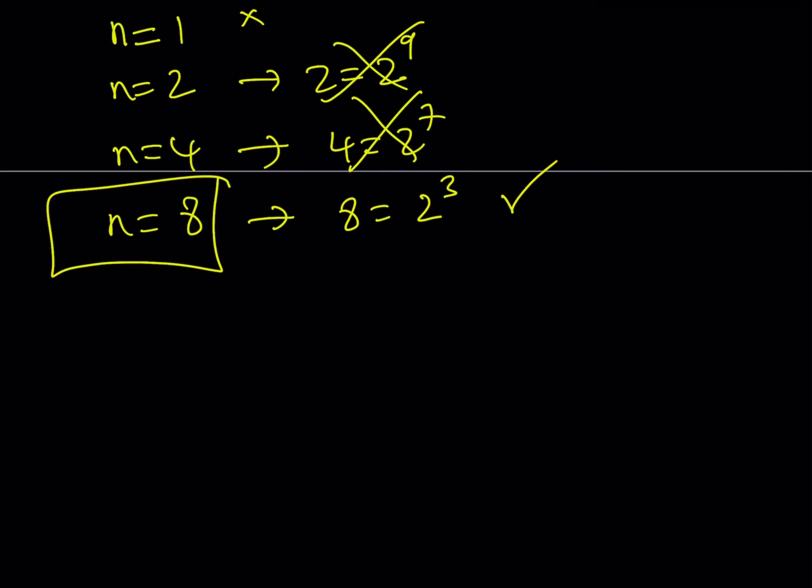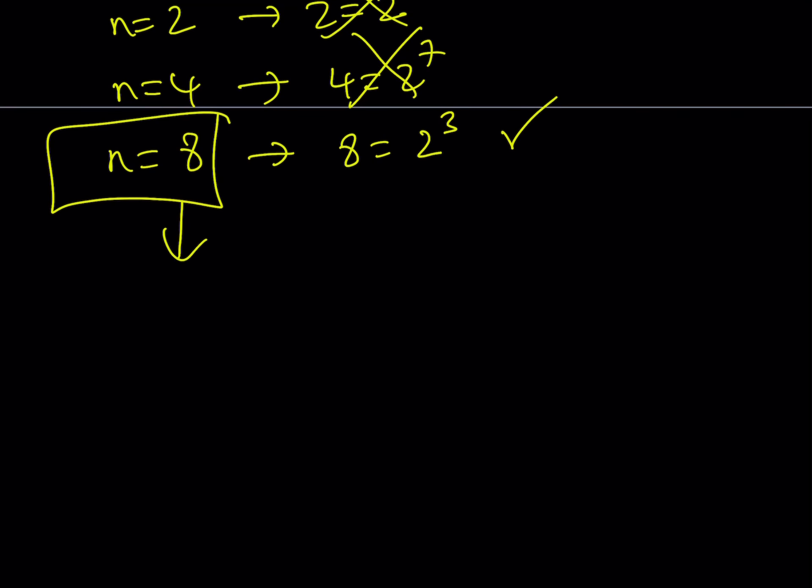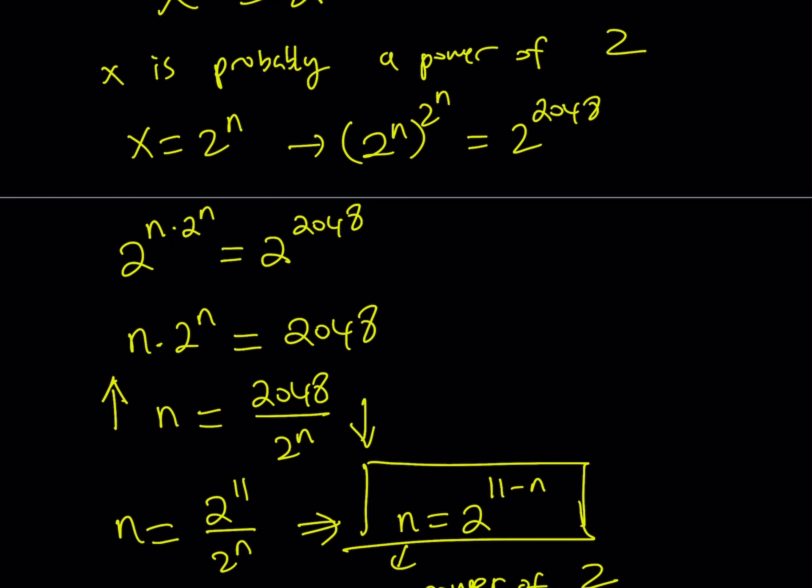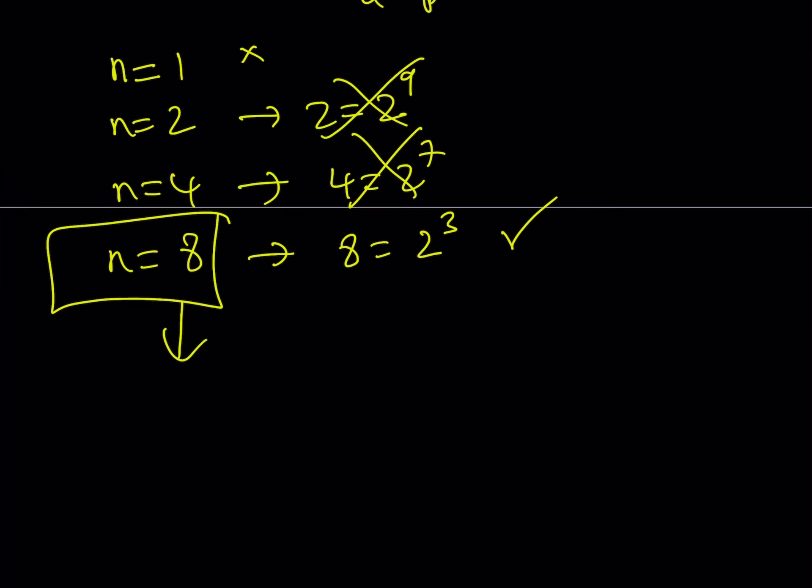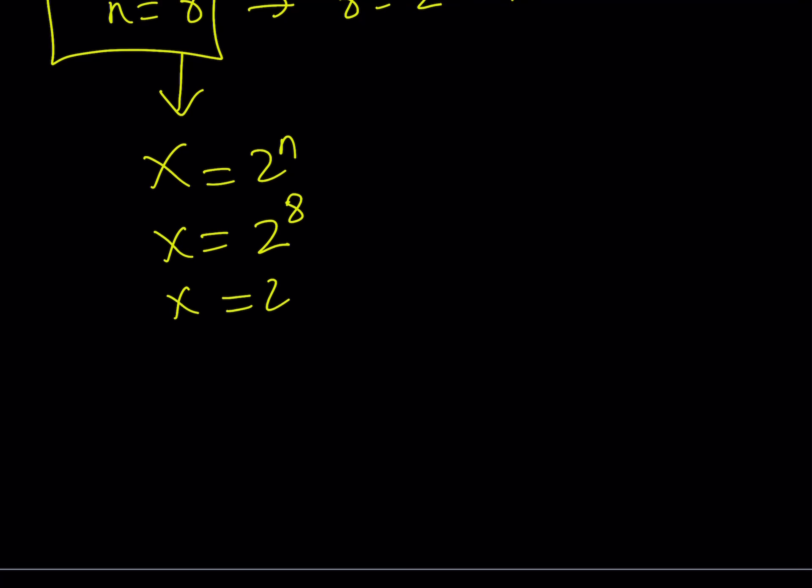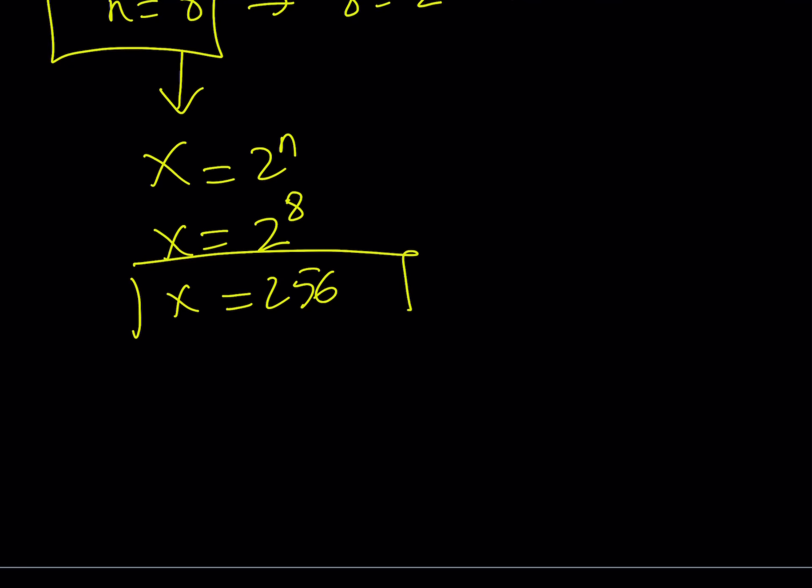But remember, we're not looking for n. We're looking for x. Therefore, what is the relationship between n and x? Oh, we assume that x is equal to 2 to the power n. So x is equal to 2 to the power n. And since n is equal to 8, x becomes 2 to the power 8. Therefore, x equals 256. Great.